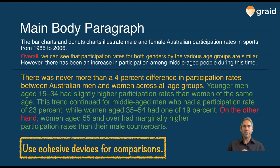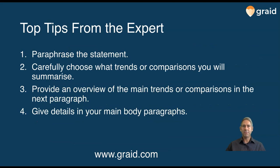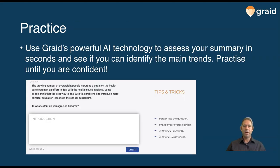I'm sure I'll make at least 150 words — in fact I might have too many, in which case I could cut out one detail, or better yet, make the second main body paragraph a little shorter. To recap: paraphrase the statement, then carefully choose what trends or comparisons you will summarize — take your time there, because if you don't do that carefully you may go off topic or find it too hard. Write an overview of the main trends and comparisons starting with 'overall,' then explore those comparisons in detail in your main body paragraphs. Jump onto GRADE and practice until you are confident.